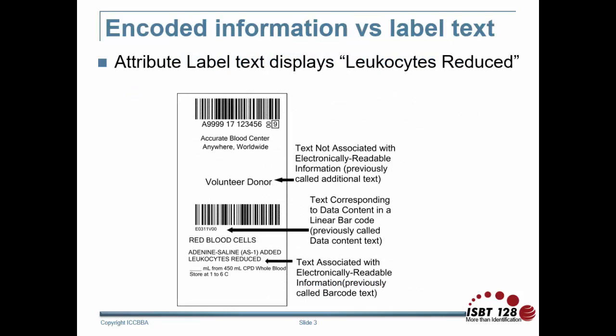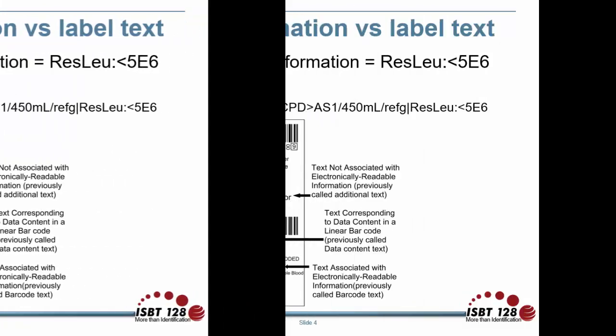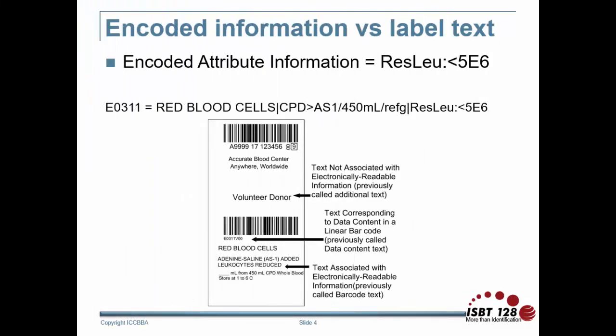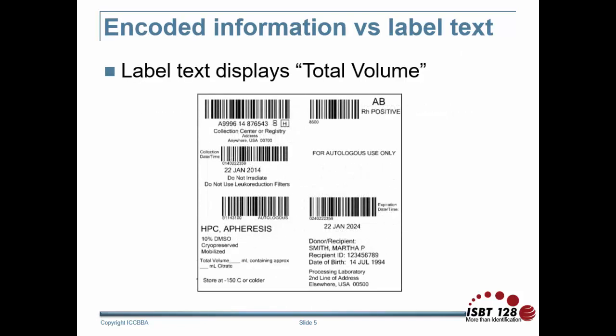An example can be found in the information encoded for the blood attribute for residual leukocyte content. The label text displays 'leukocytes reduced.' However, if you were to scan the product barcode, the residual leukocyte content attribute encoded for product description code E0311 is RESLU less than 5E6.